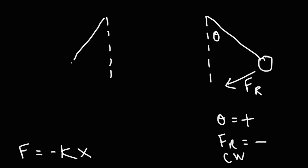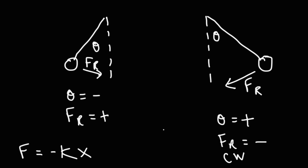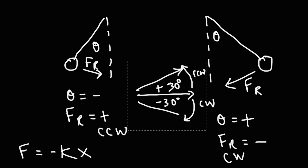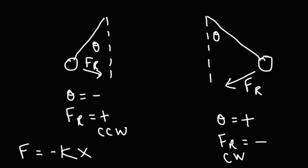On the other side, if the pendulum is to the left, the angular position is negative, and the restoring force appears to be going to the right — basically positive, going in the counterclockwise direction. Starting from the positive x-axis, if you go in the counterclockwise direction you get a positive angle; if you go in the clockwise direction you get a negative angle. So a restoring force that goes in the counterclockwise direction is a positive restoring force, and one that goes in the clockwise direction is a negative restoring force.